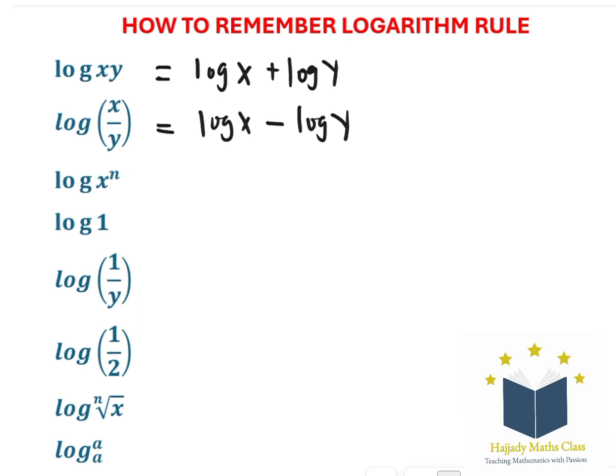For the third rule, we have log x^n. The power n is going to come in front of the logarithm. So you're going to have n log x.